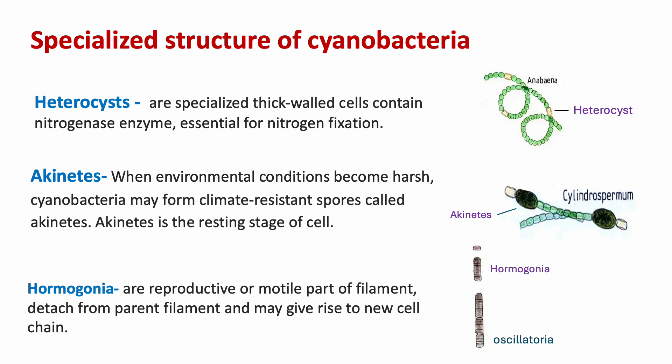Besides vegetative cells, cyanobacterial cells also have specialized structures. The first is heterocysts: specialized thick-walled cells containing nitrogenase enzyme, which is necessary for nitrogen fixation. These cells function in an anaerobic environment. Next are akinetes: when environmental conditions become harsh, cyanobacteria form climate-resistant spores called akinetes — the resting stage of the cell. Hormogonia are reproductive or motile parts of the filament; certain cyanobacterial species produce chains of motile cells for dispersion that detach from the parent filament and give rise to a new cell chain.